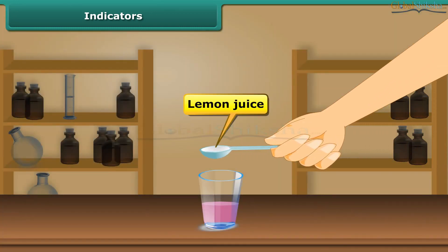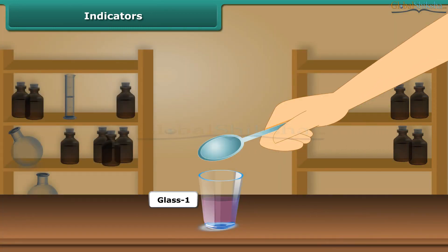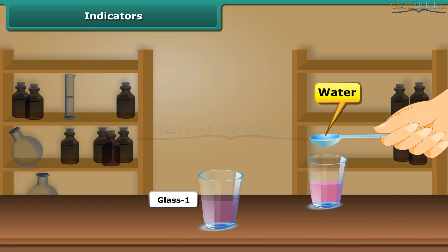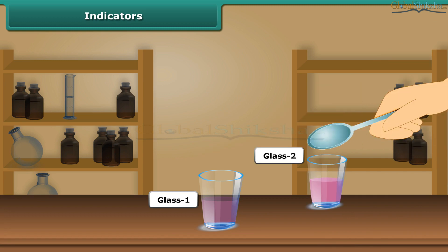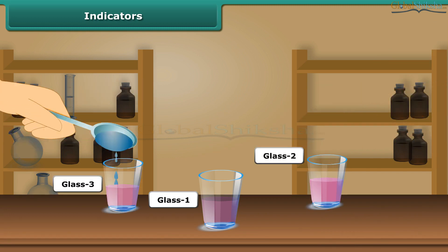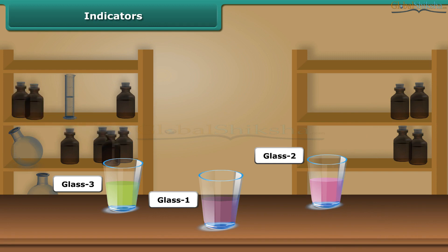Take a small amount of this indicator in three small glasses. Pour lemon juice in the first glass, water in the second glass, and soap solution in the third glass. In glass one, the color changes to dark pink. Lemon juice is acidic in nature, so there is a change in the color of the indicator.